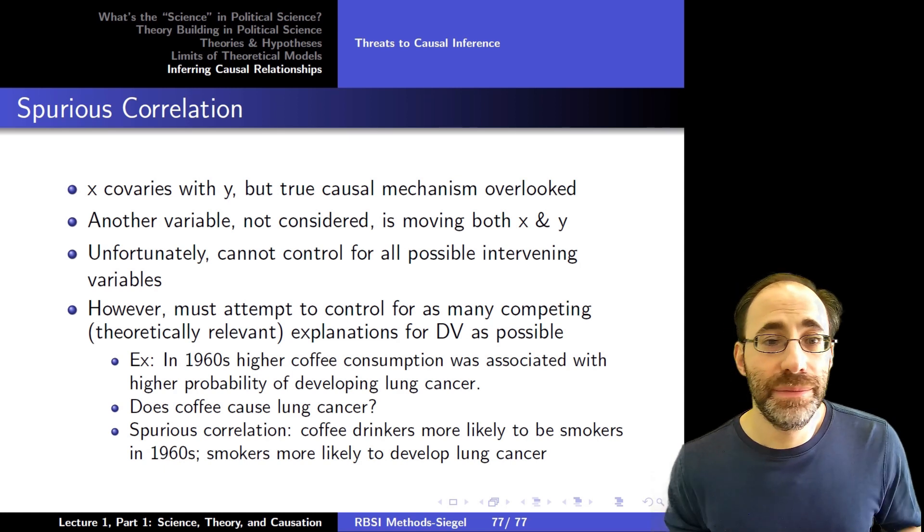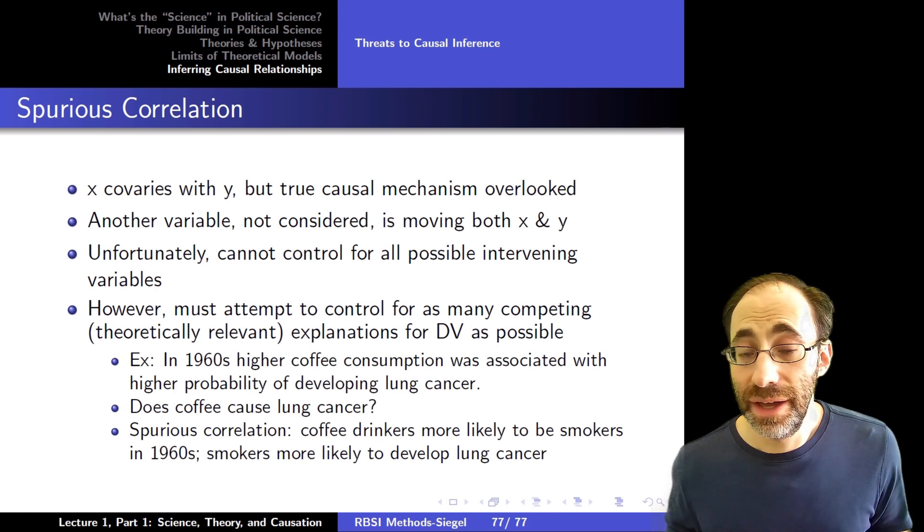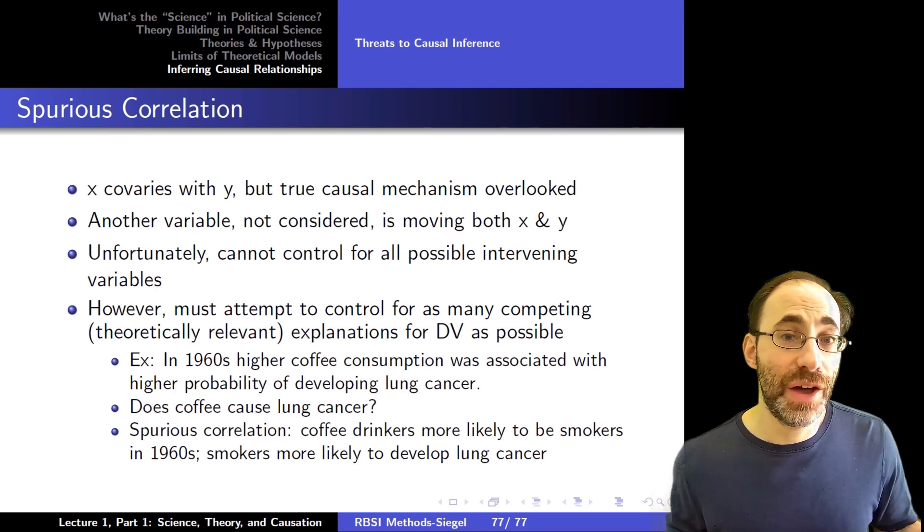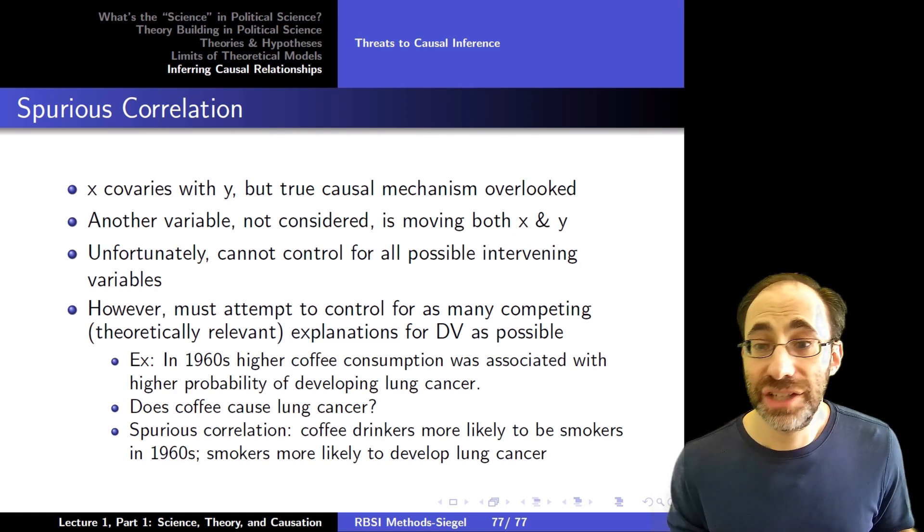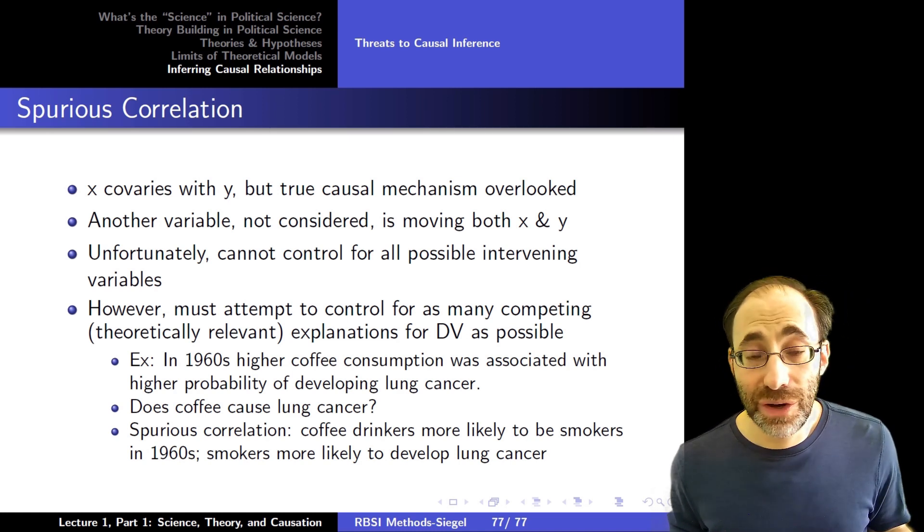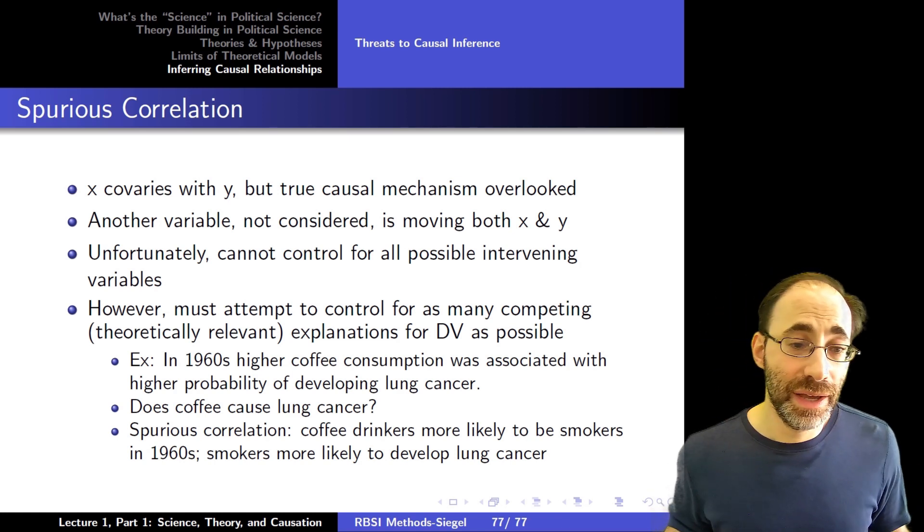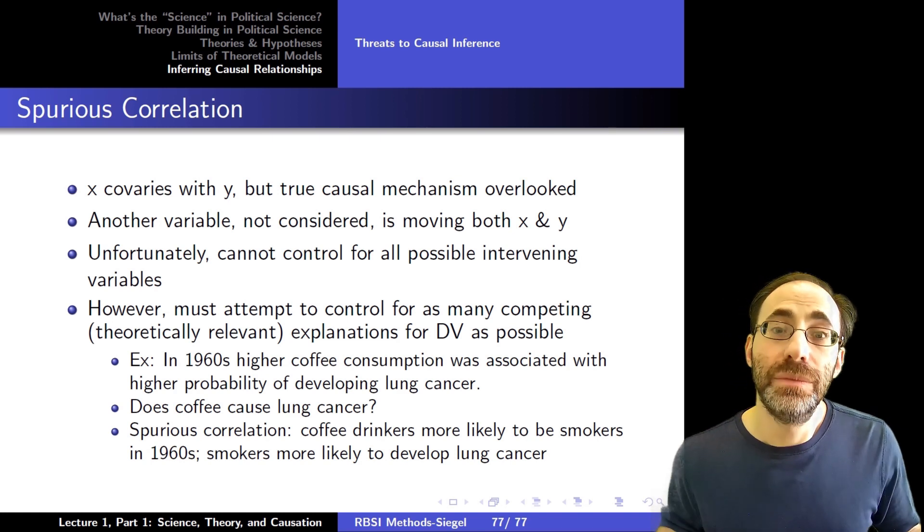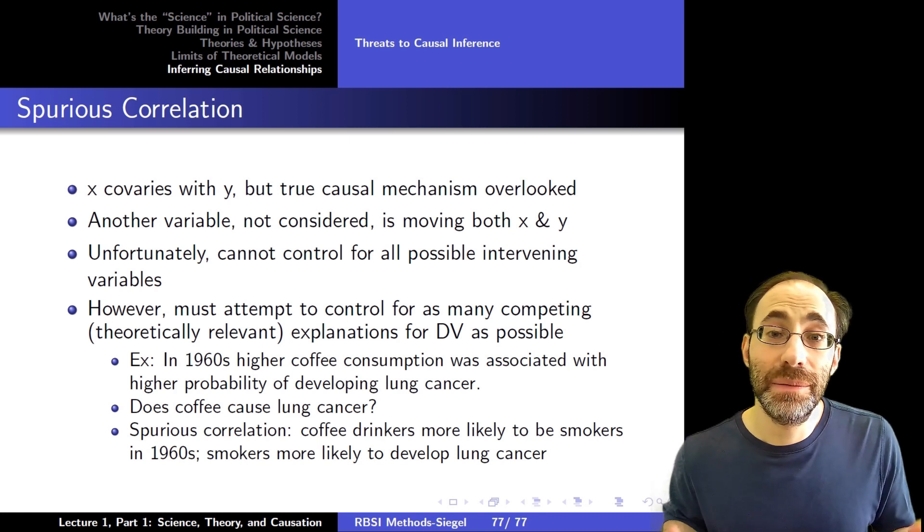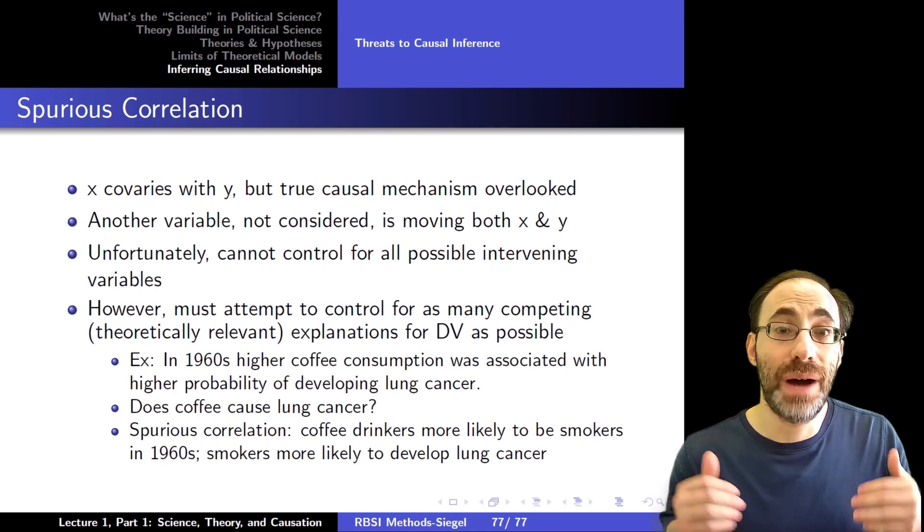And finally, returning to spurious causation, we might see that X does covariate with Y, that X and Y are correlated, but we've missed the true causal mechanism connecting X to Y. There might be some other variable Z that's not considered that's actually affecting both X and Y. This is tricky because we can't control for all possible intervening variables. There's an infinite number of possible things that could matter in theory, and we can't control for all of them. What we're going to do instead and learn how to do in this course instead is attempt to control for as many competing theoretically relevant explanations for the dependent variable as possible.